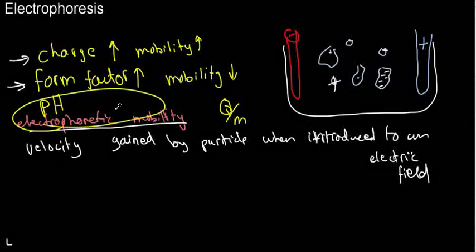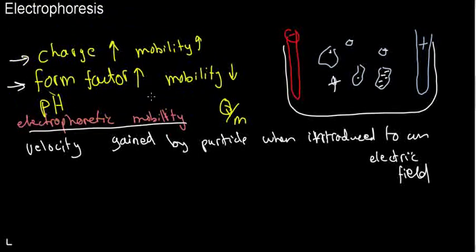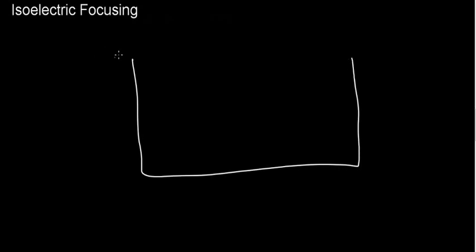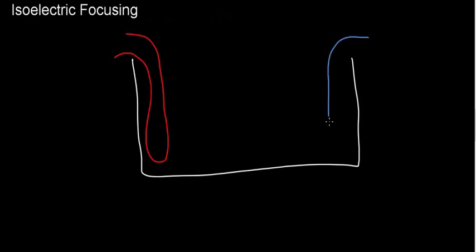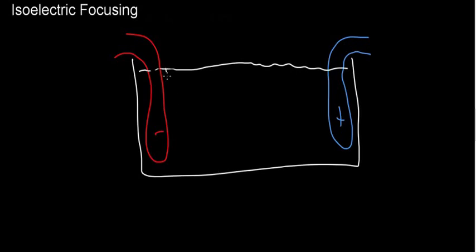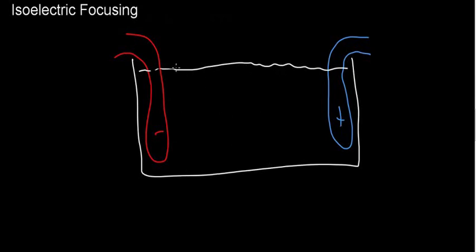We've defined electrophoretic mobility, we've defined electrophoresis and all its relationships, and I'm quite satisfied that we've covered most of what's necessary for an exam. Now we're going to talk about isoelectric focusing. Isoelectric focusing is really quite simple. If I have negative and positive electrodes, what I can do is create a solution that has a pH gradient — areas where the pH changes progressively, like straight lines at pH 4, 5, 6, 7, 8, etc.